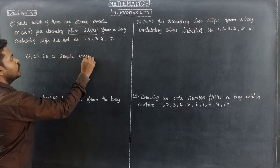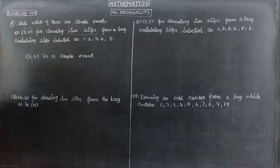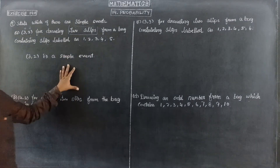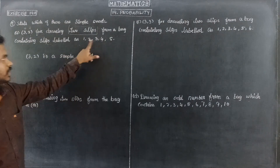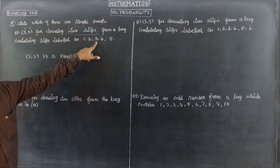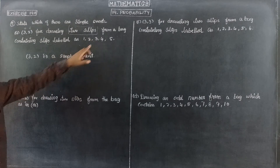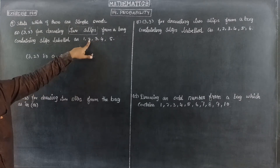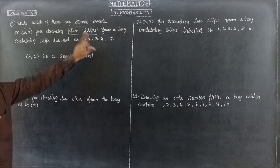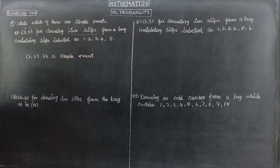And also only one possible outcome. So only one possible outcome means it is a simple event. 3,2 is the outcome. So this is a simple event. Therefore 3,2 is a simple event.